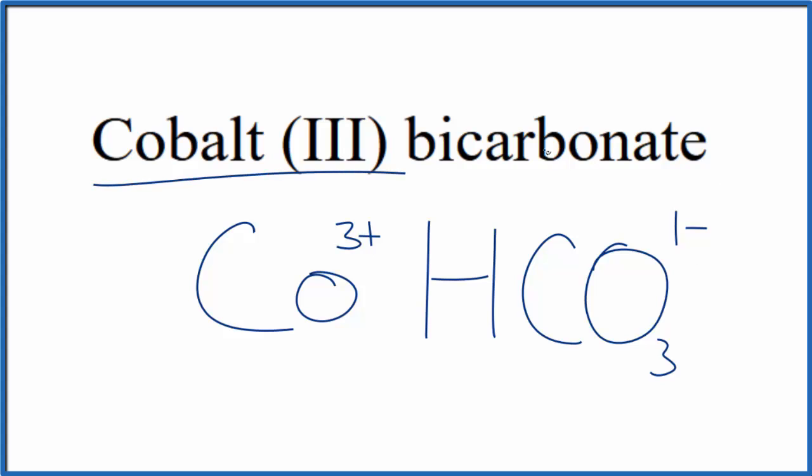So cobalt is a transition metal, and then we have this bicarbonate ion. It's a group of non-metals. So we need to make sure that these charges here add up to zero, give us a net charge of zero.